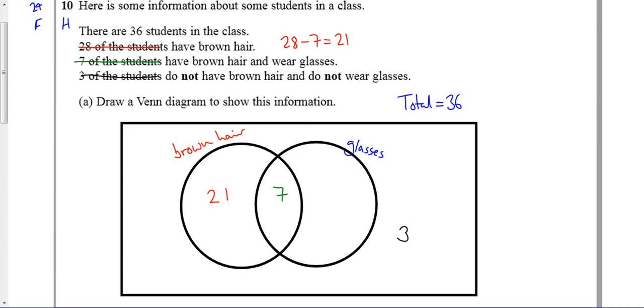Now, if I add them all up now, 7 plus 3 is 10, 10 plus 21 is 31, but I should have a total of 36, so it means that I'm missing five people. And that's how I need to fill out my Venn diagram.